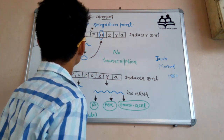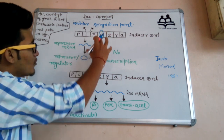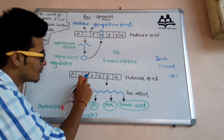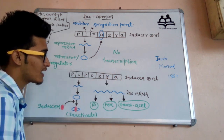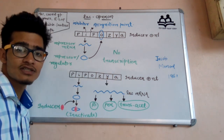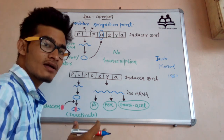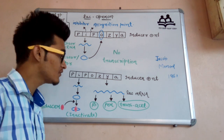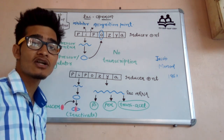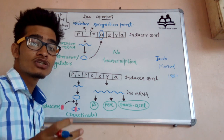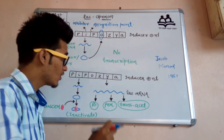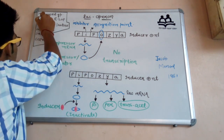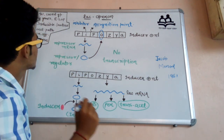The Lac operon is a coordinated group of genes. All the genes — P, I, P, O, Z, Y, A — that you are looking at in this particular diagram are all genes, and they work in a coordinated manner to synthesize different kinds of enzymes or proteins. This coordinated group of genes is known as Lac operon.